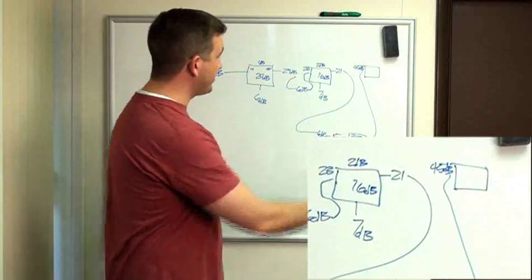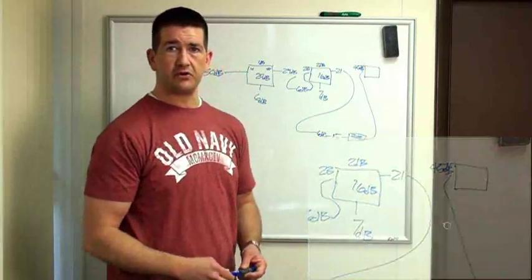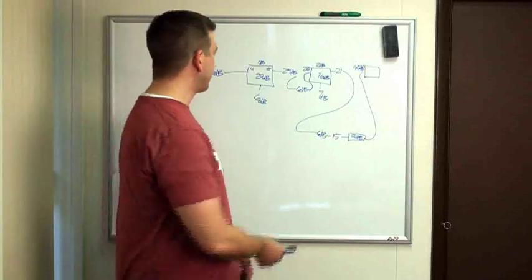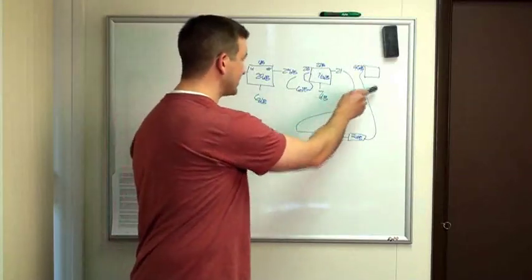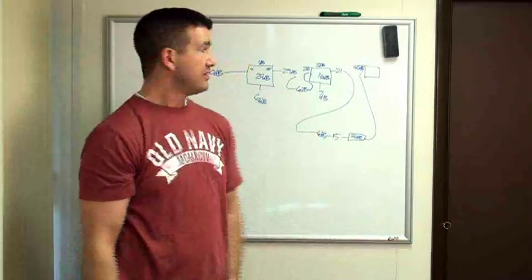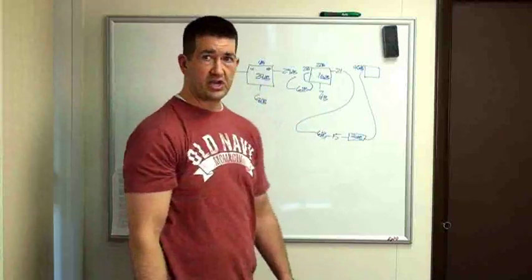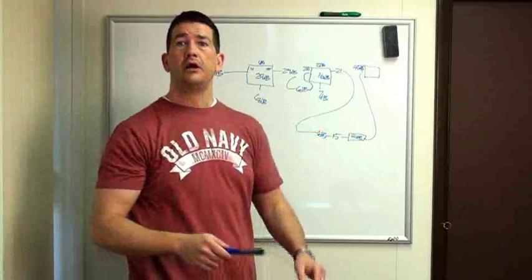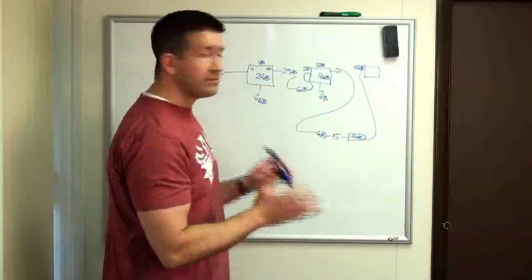This is the basic calculations for doing taps. Just simple addition and subtraction. Like I said before, if there's multiple outputs on these taps going to multiple TVs, the value of the insertion losses may change. But the calculations that we just did figuring out what the values are, are going to be the same.